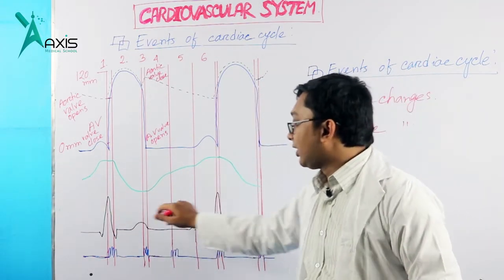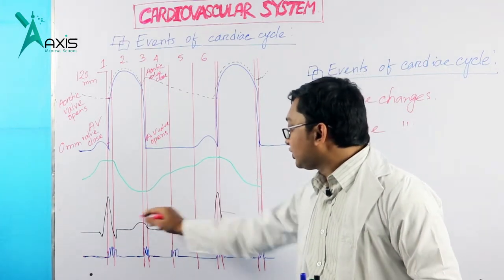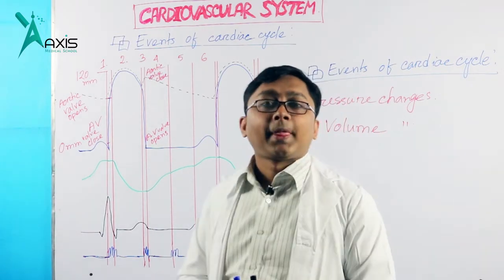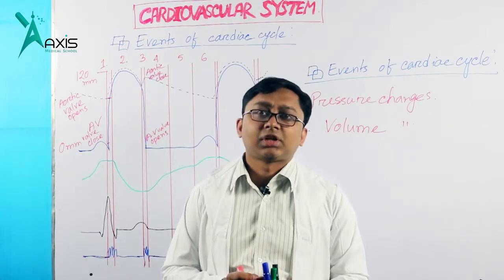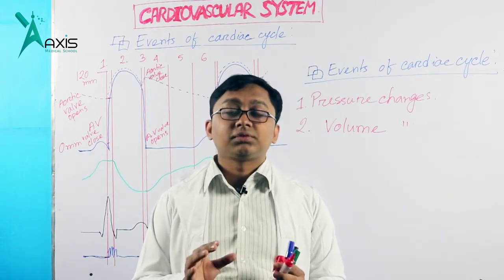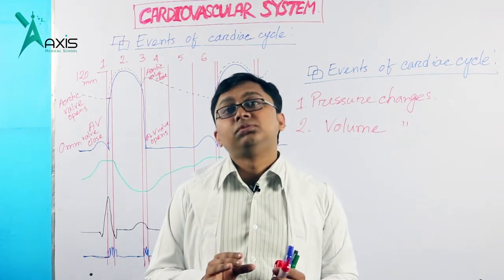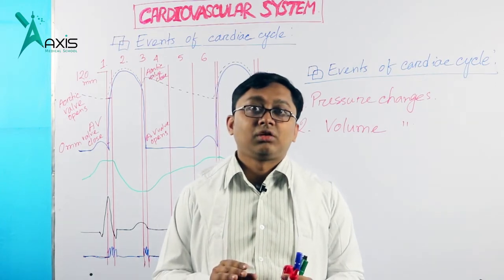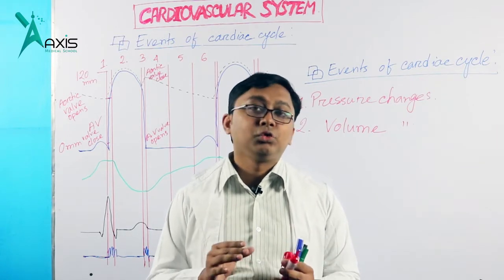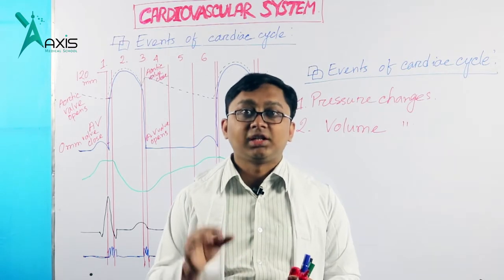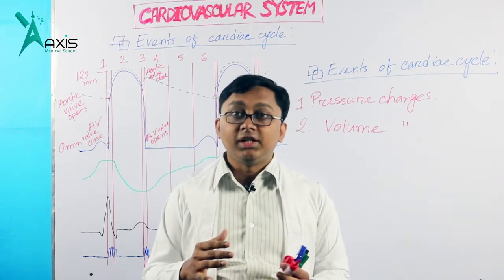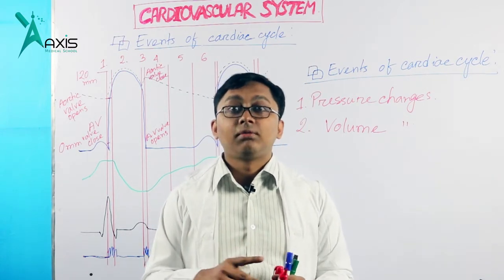These electrical changes we represent in ECG. Here is an ECG tracing, which shows the electrical changes of the heart. Another event is heart sounds. Usually we get two heart sounds, that is S1 and S2, or first heart sound and second heart sound — like the sound lub-dub, lub-dub. And sometimes we also get S3, that is the third heart sound, and a fourth heart sound.